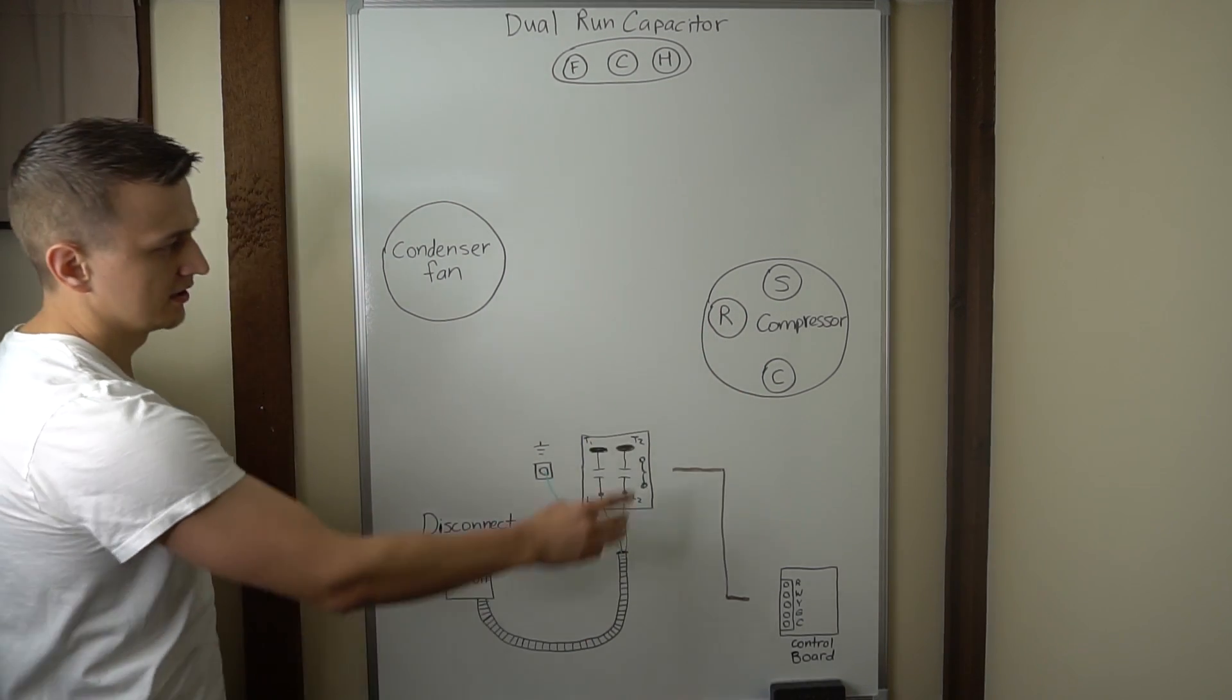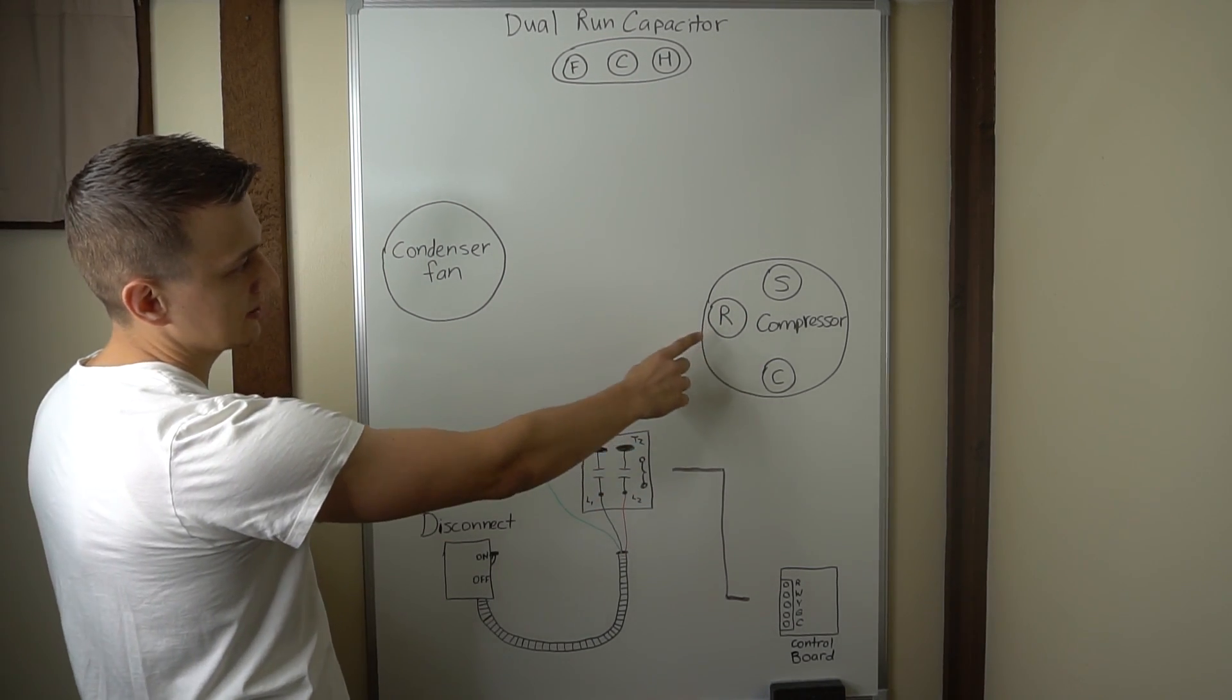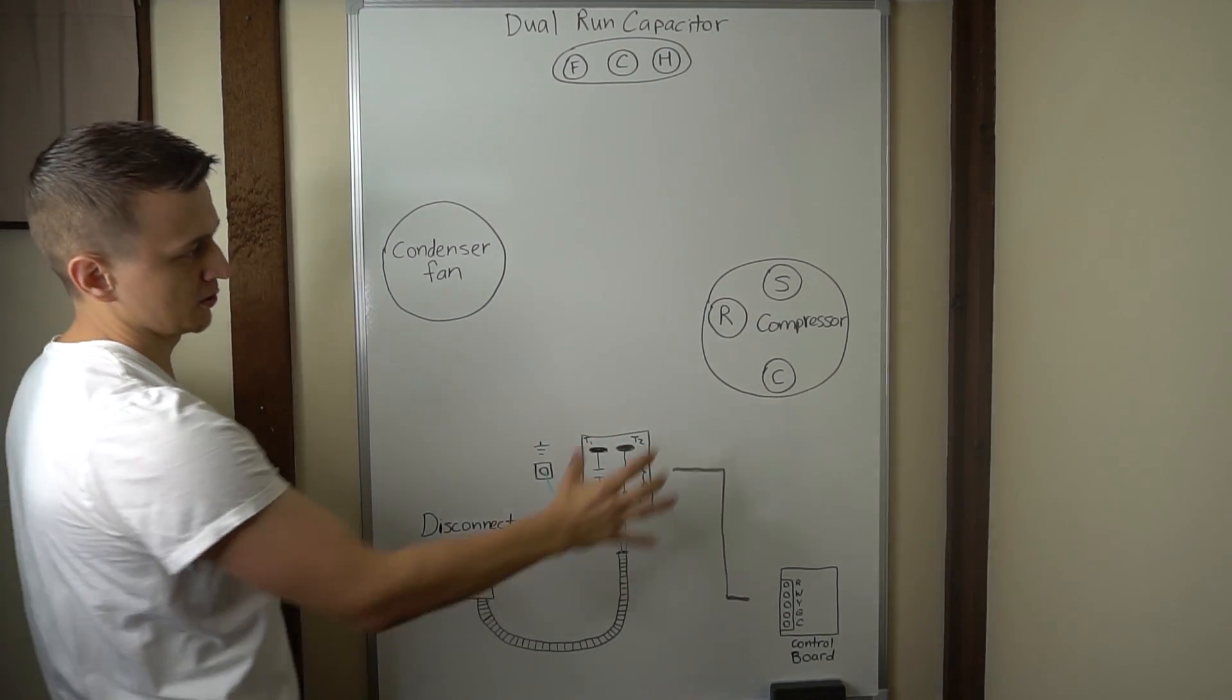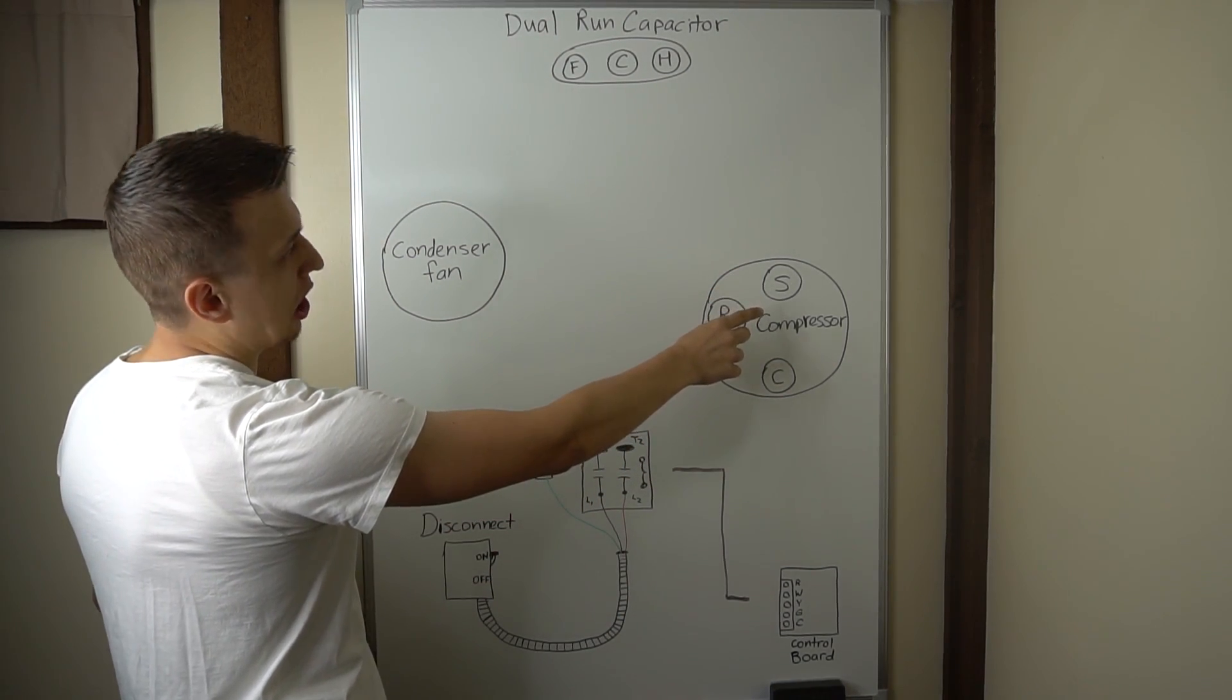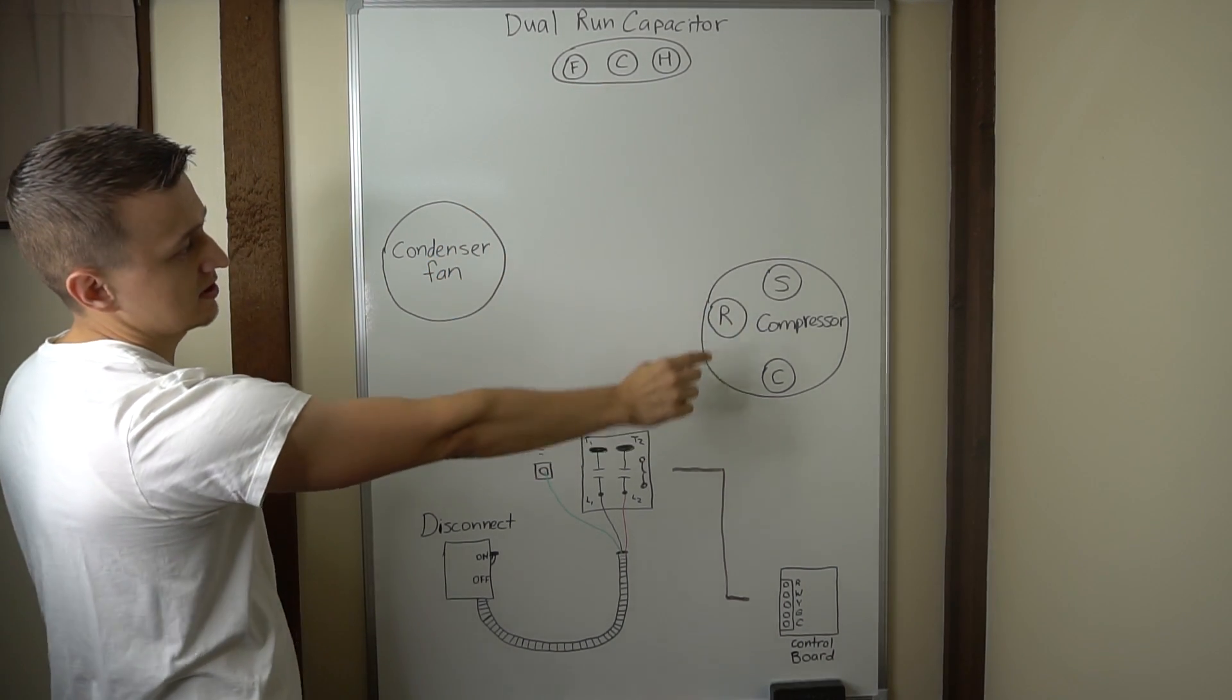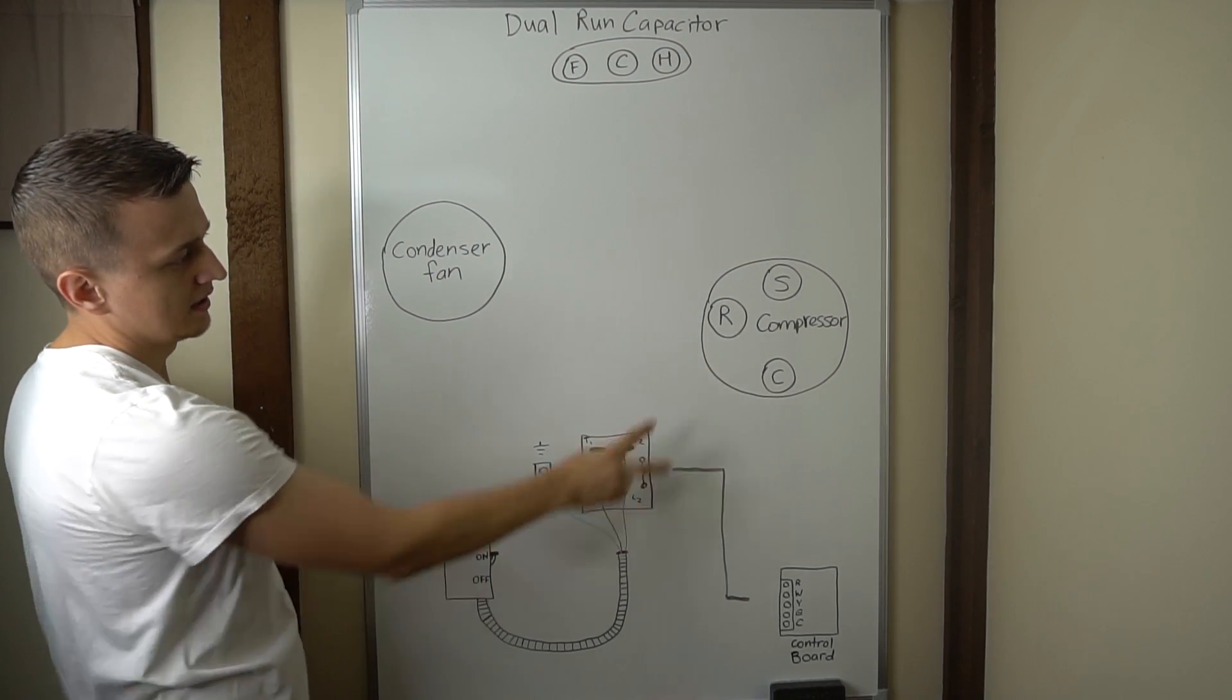Next up, let's go ahead and wire up our compressor. The compressor will have three wires coming out of it: a wire coming from the common, the run, and the start windings. And there's only one thing you need to remember about this. The start winding always goes to the run capacitor. So if you have a dual run capacitor, the start winding will always be the one that is connected to Herm.